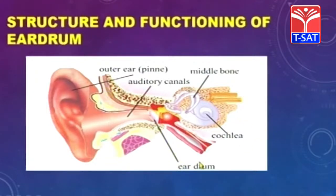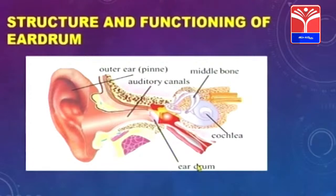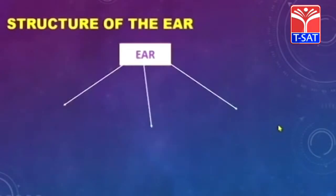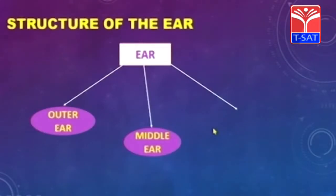The most important part of the ear system is the eardrum, which is also called the tympanum. Since childhood, you must have heard your parents saying not to put any sharp objects inside our ears, because it is a very sensitive part. The ear basically consists of the outer ear, the middle ear and the inner ear.